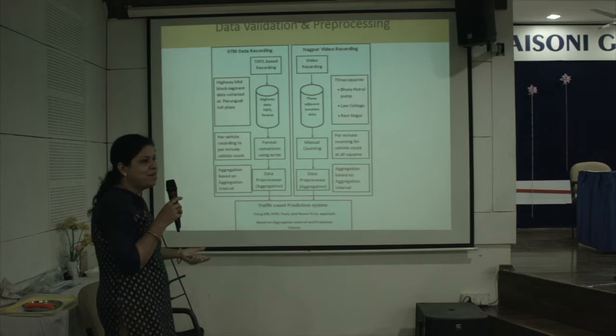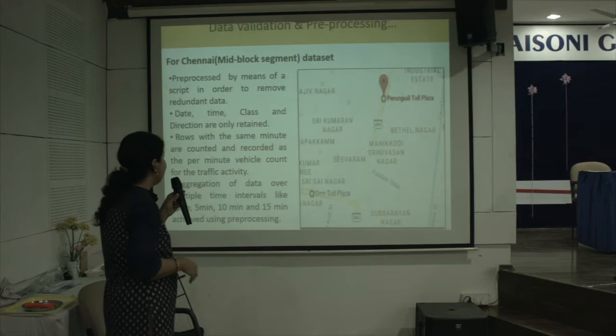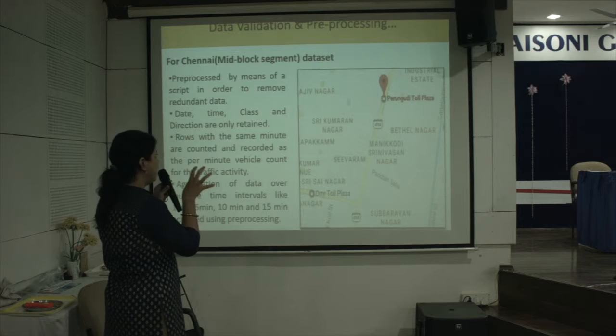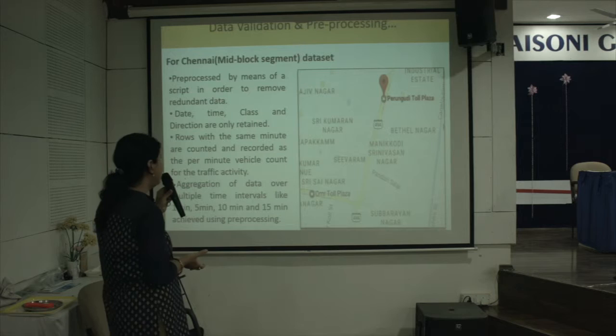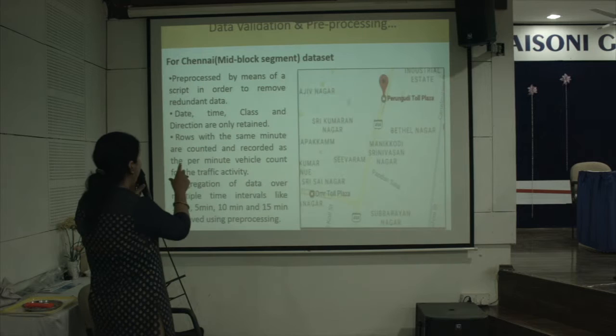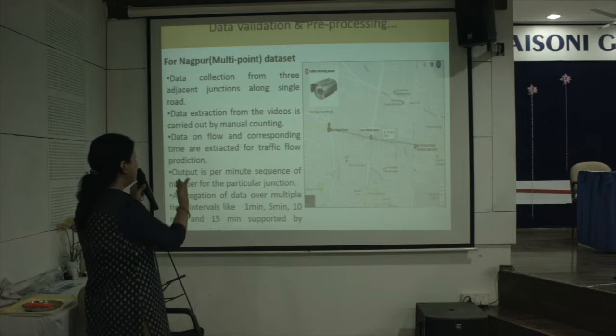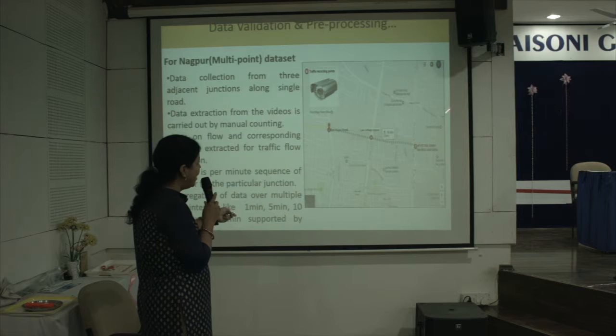For the Chennai dataset, the recording location is a mid-block segment. Only four attributes are considered as input features for traffic flow prediction: date, time, class, and direction. For the Nagpur dataset, which is a multi-point dataset, data collection involves video recording and manual counting for data extraction. The output is a per-minute sequence of vehicle counts for each particular junction, with data recorded at three adjacent intersections along a single road.